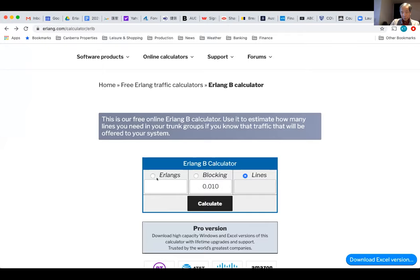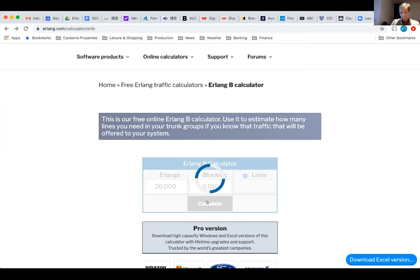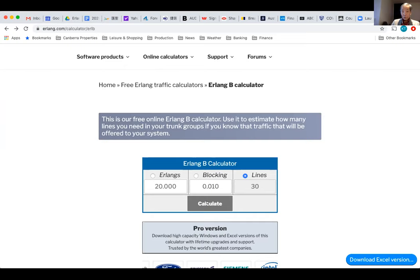An example we want is with A equals 20 and 1% blocking probability, how many lines do we need? A quick calculation shows about 30 lines. This is an example of how online calculators work.